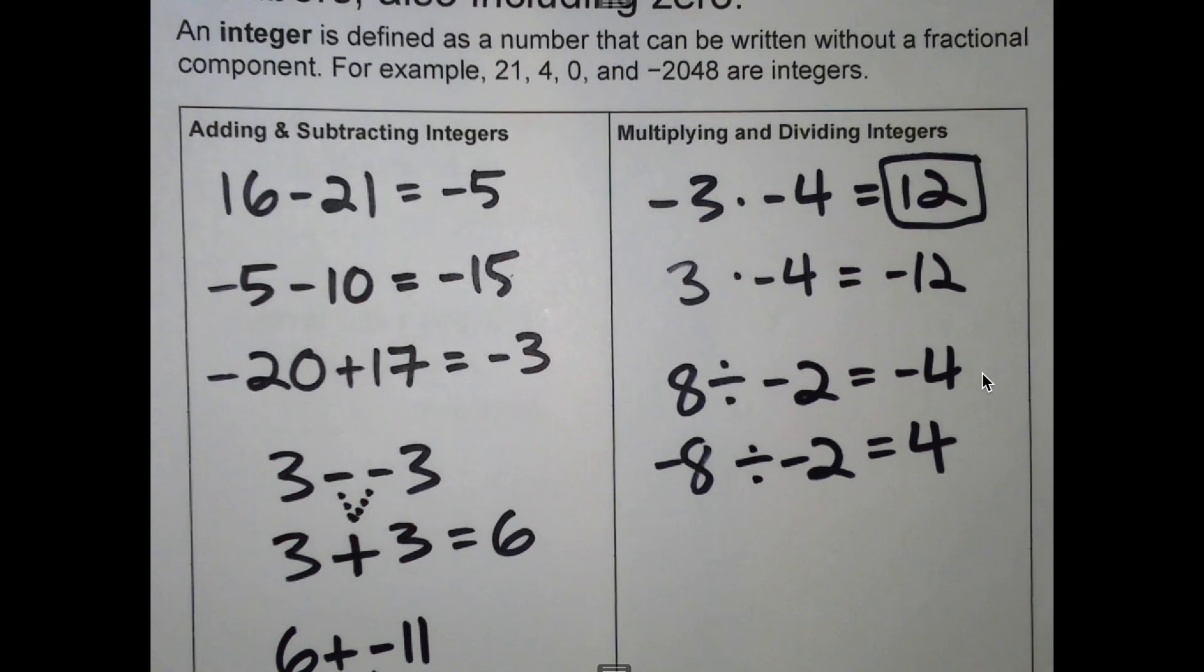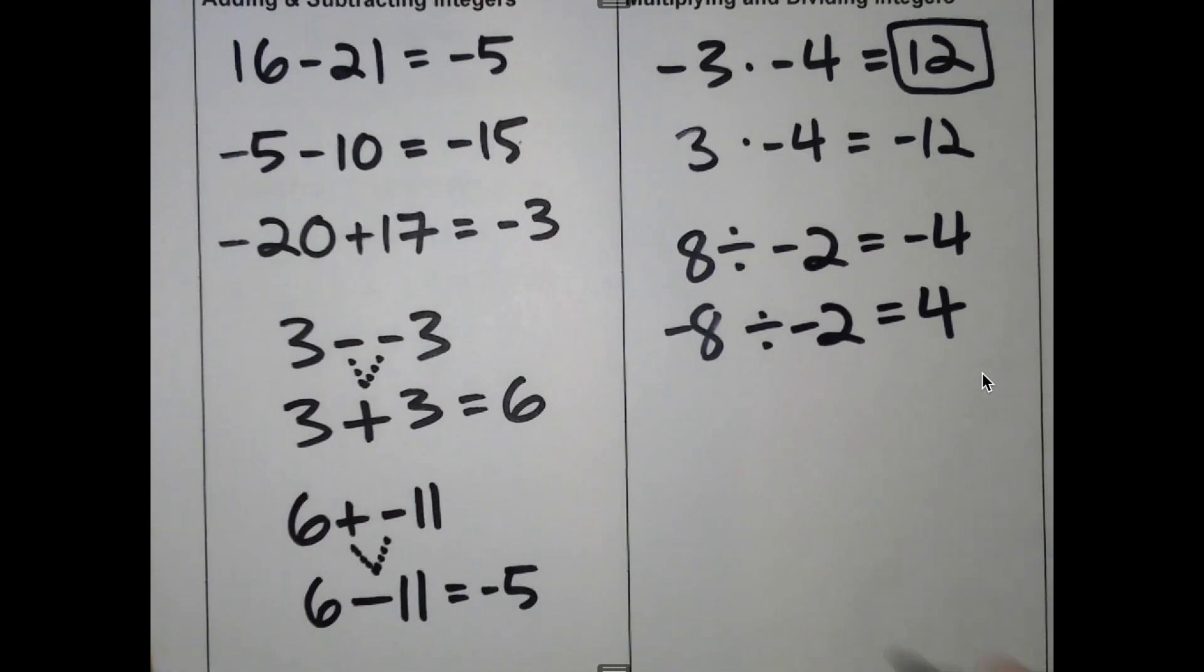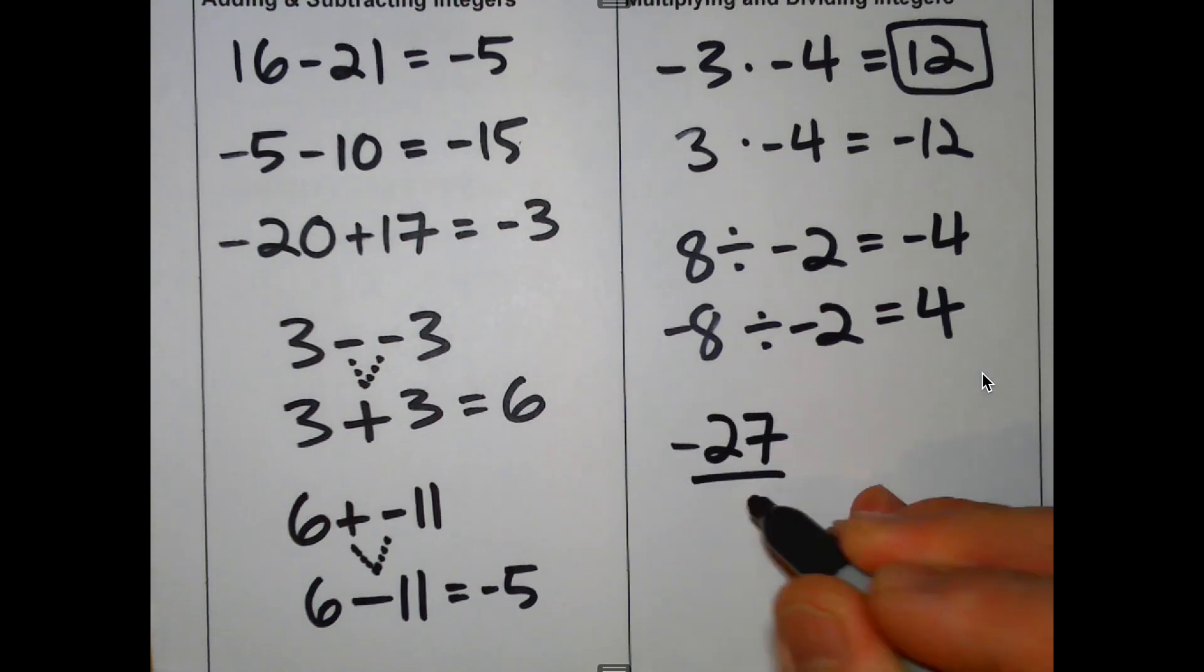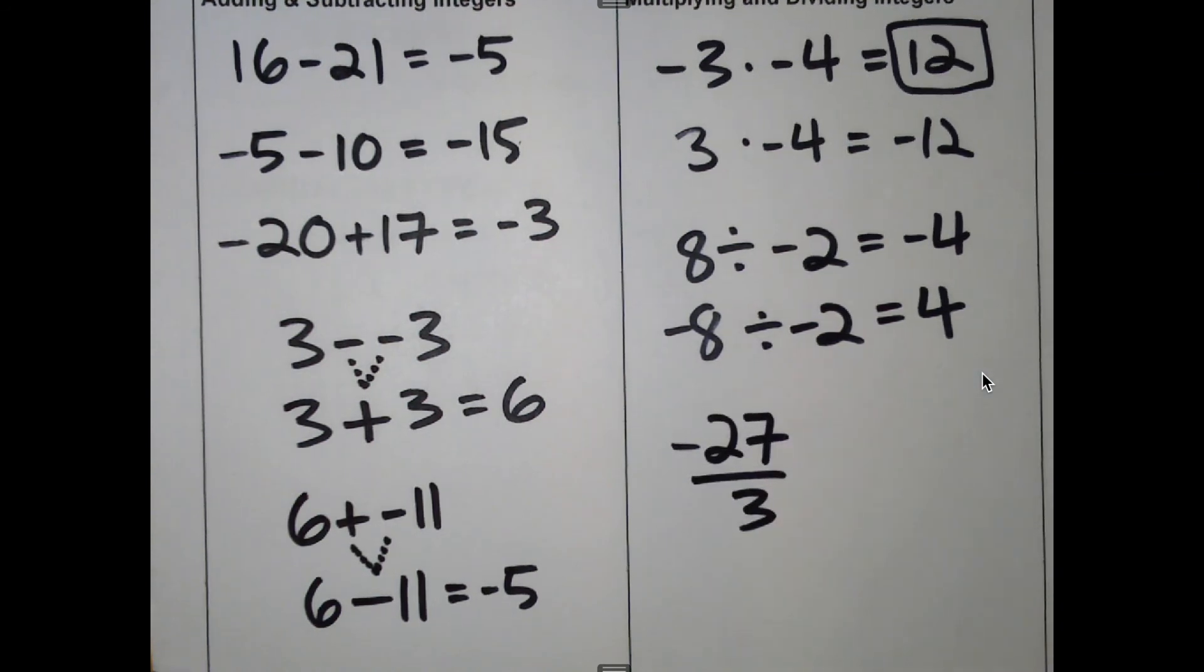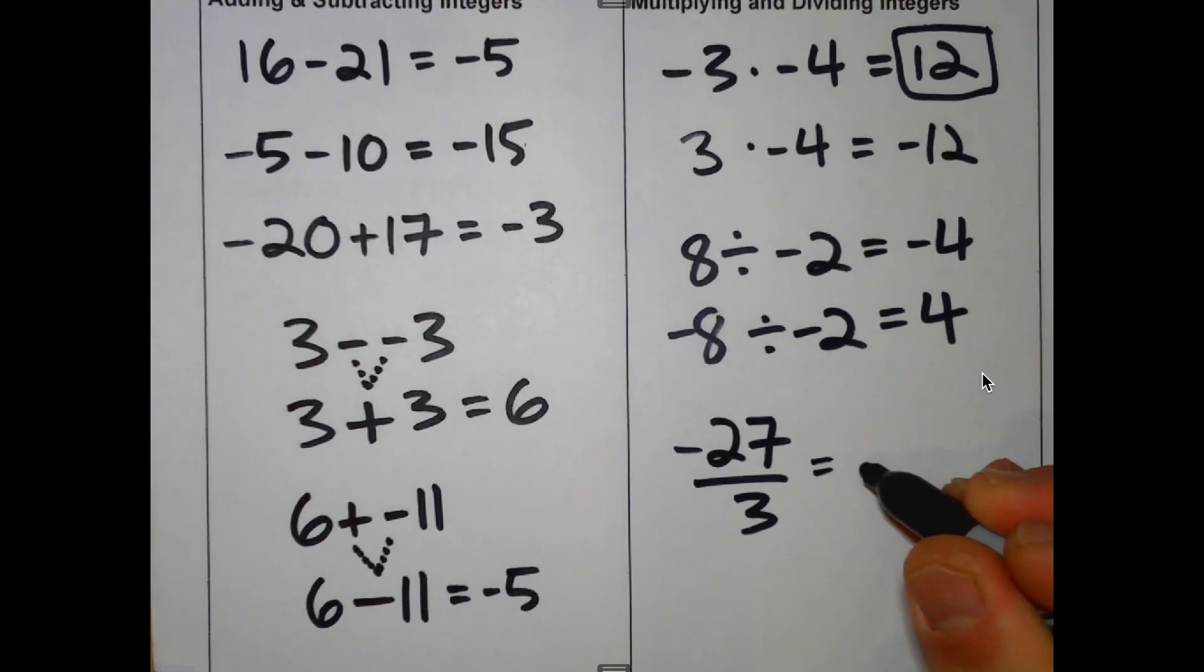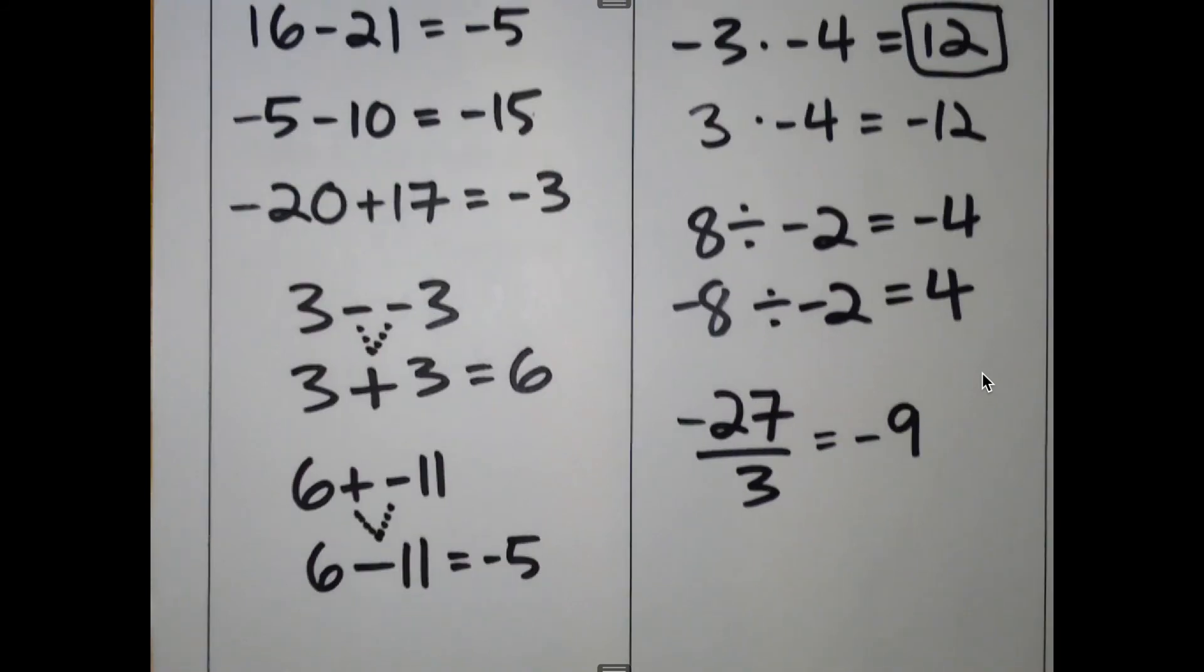So fractions, as I like to say, fractions are really division. So in this example, negative 27 over 3 is really saying a negative number divided by a positive number. A negative divided by a positive is a negative.